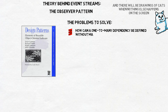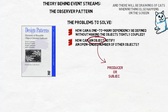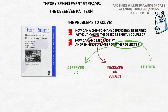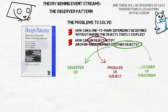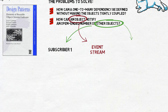How can a one-to-many dependency between objects be defined without making the objects tightly coupled? And how can an object notify an open-ended number of other objects — open-ended meaning that we don't know how many of them there are and new ones can pop up at any moment. The main object here is called a producer or a subject — it's the source of events. The other objects are observers, also known as listeners or subscribers. The terminology is a bit liberal, and I will call it simply an event stream and subscribers.